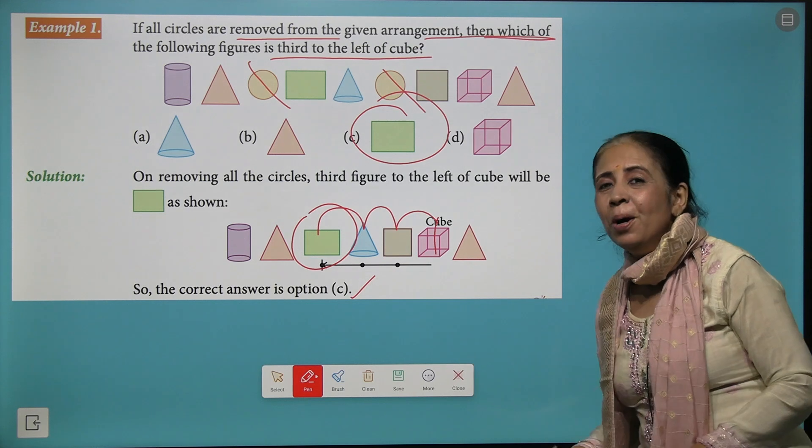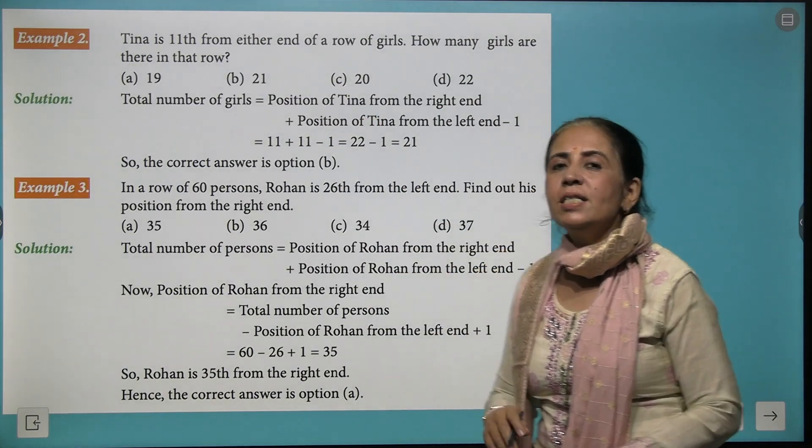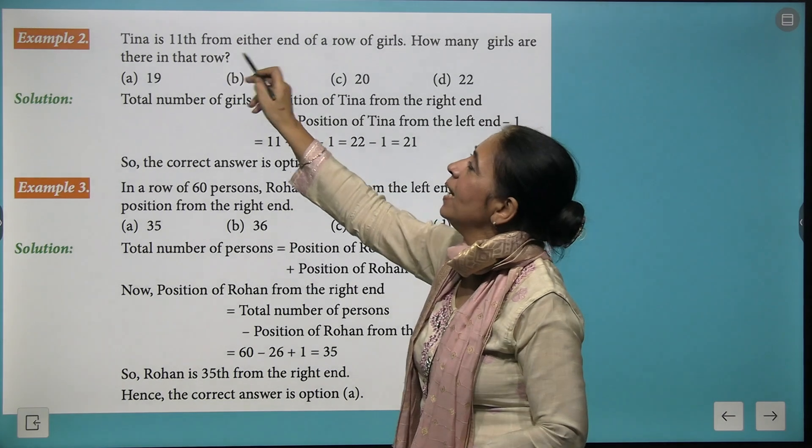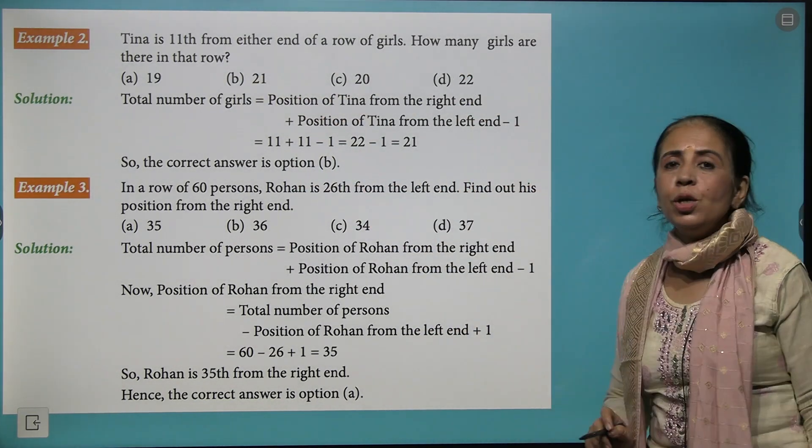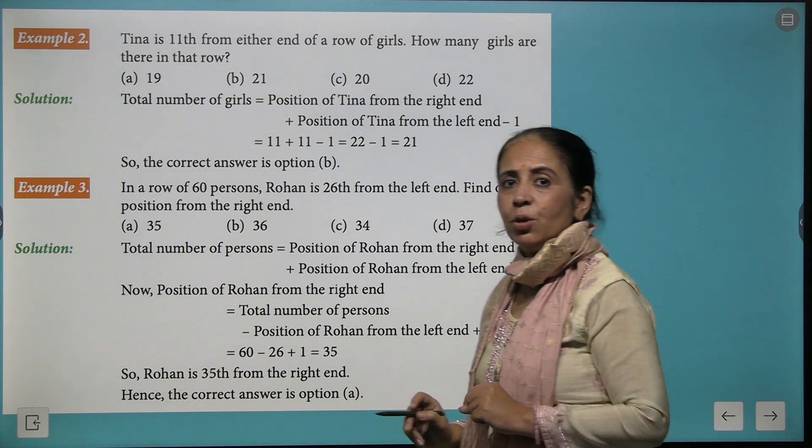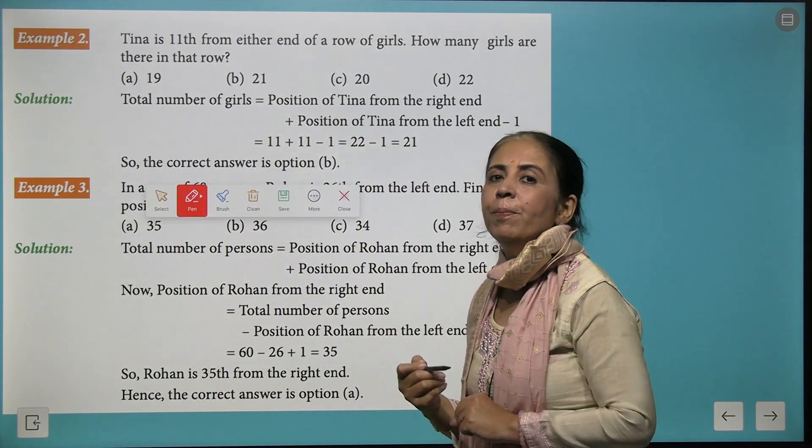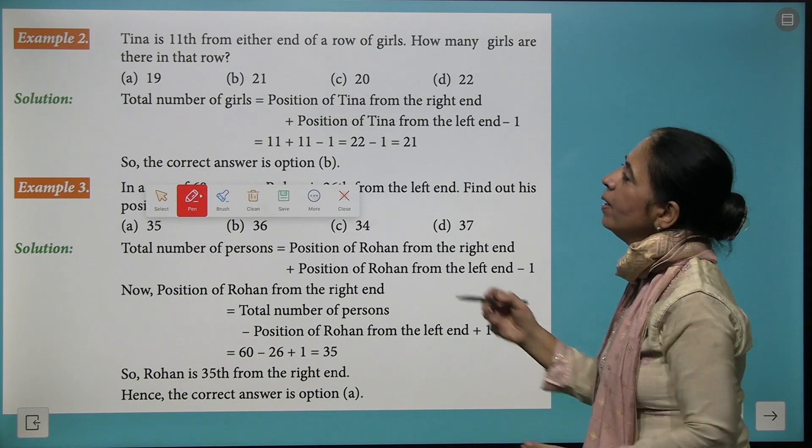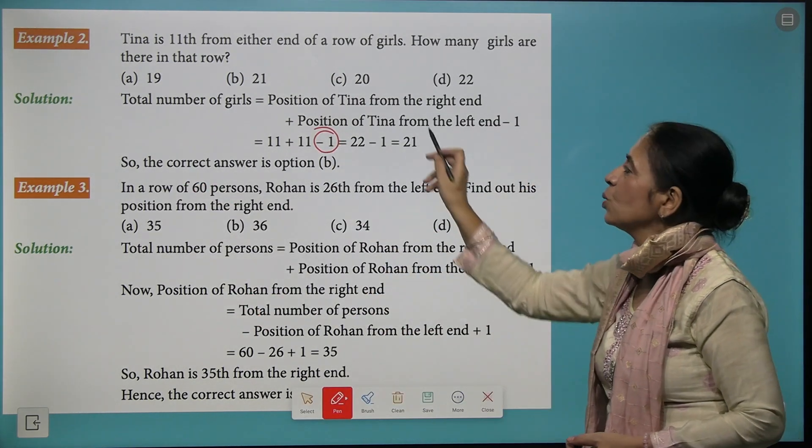Now, Tina is at 11th on either end of the row of girls. You need to find how many girls are there in the row. The rule is 11 from here and 11 from here, and then you subtract 1. So 22 minus 1 gives you 21.